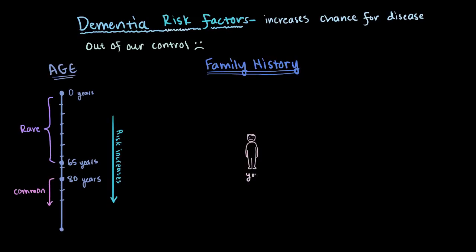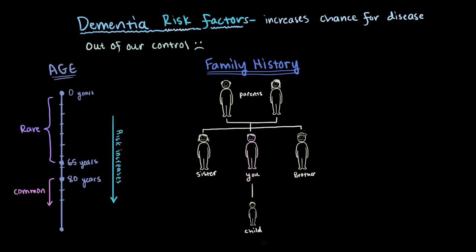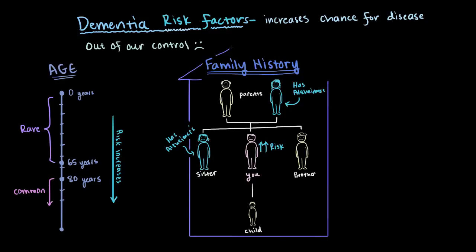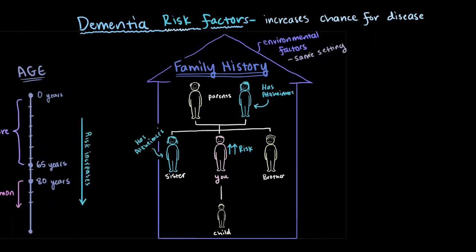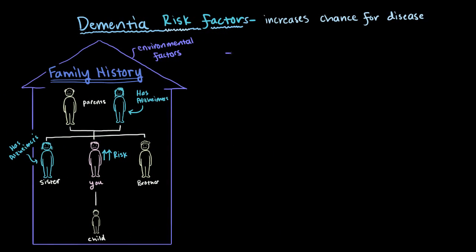So here's you, here are your parents, here are your brother and your sister, and here's your child. If any of your family has developed dementia — let's say Alzheimer's disease, because that's the most common — then you're going to be at a higher risk for developing the disease yourself. And this can be the result of environmental factors, like how or in what setting you were raised, since it's probably going to be a similar setting for your immediate family.